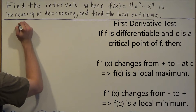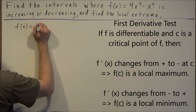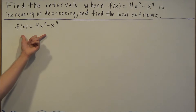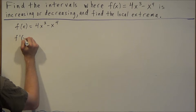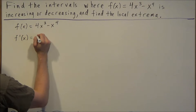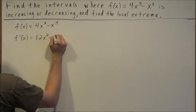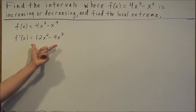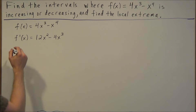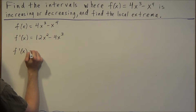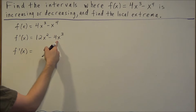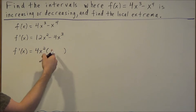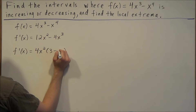Starting off with f of x equals 4x to the third minus x to the fourth, the first thing we want to do is find the derivative. So we'll have f prime of x equals, and using the power rule, the derivative is 12x squared minus 4x to the third. At this stage we're going to find the critical points, so we're going to factor the derivative and set it equal to zero. The greatest common factor is 4x squared, leaving 3 minus x in parentheses.